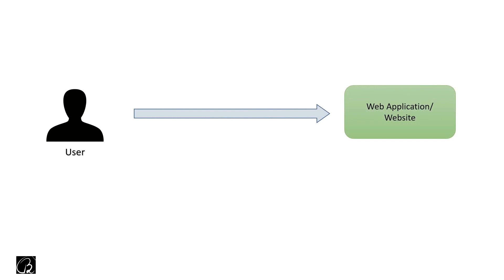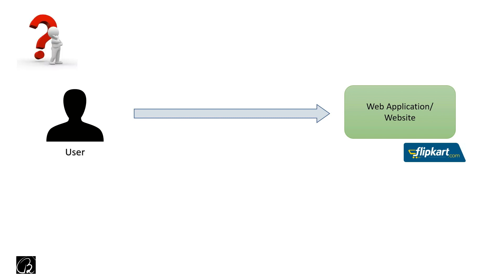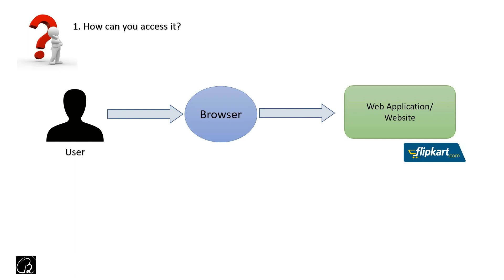Let's consider a scenario where a user wants to access a web application — for now we can consider this user as you. So when you would like to access a web application or website like Flipkart.com, here is my first question: how can you access it? You cannot access a web application or website directly — you need something in between. That is what is called a browser. You actually need a browser in between in order to send a request to that web application or website.